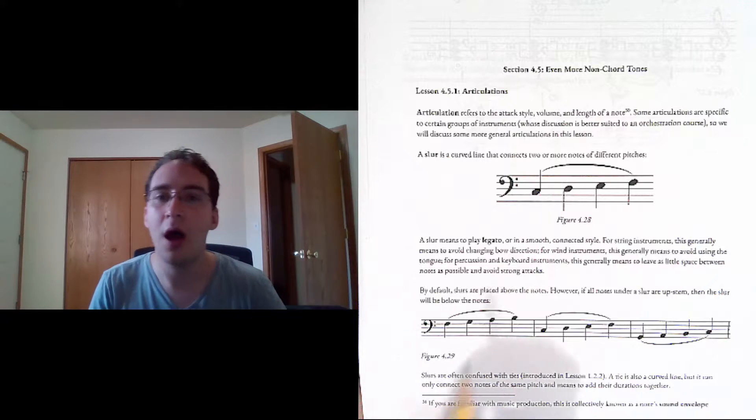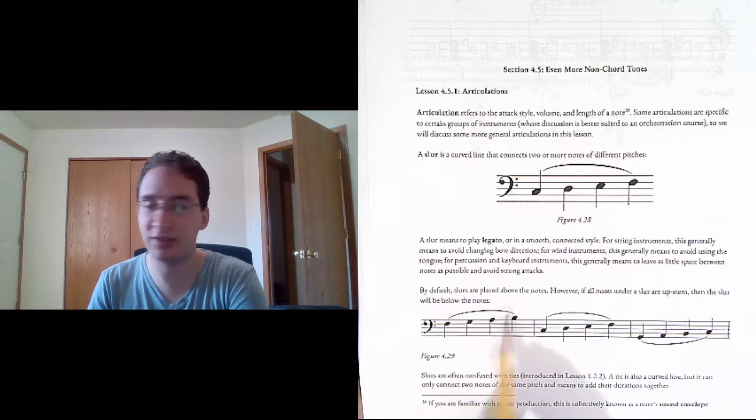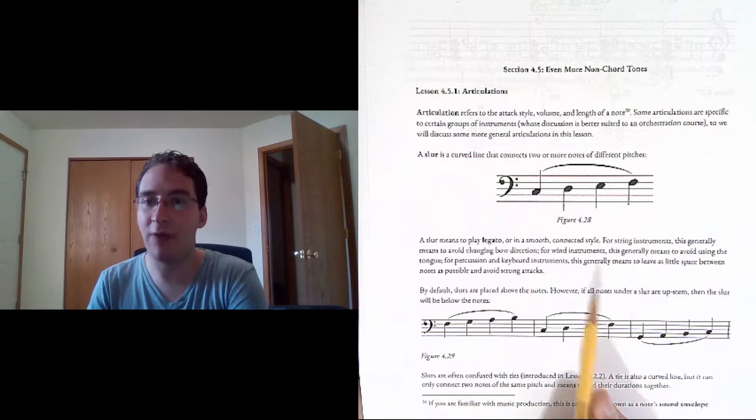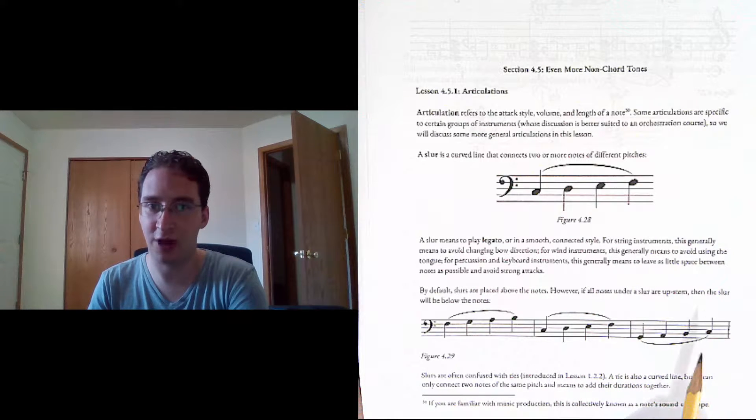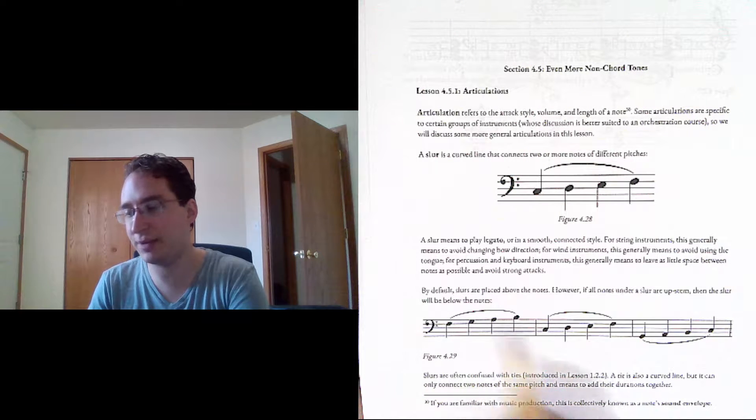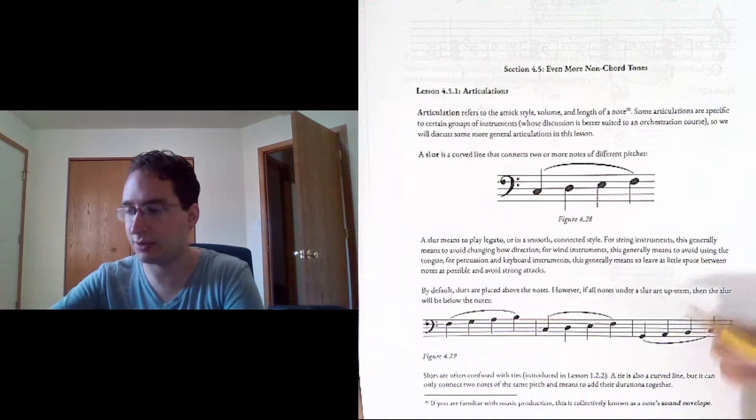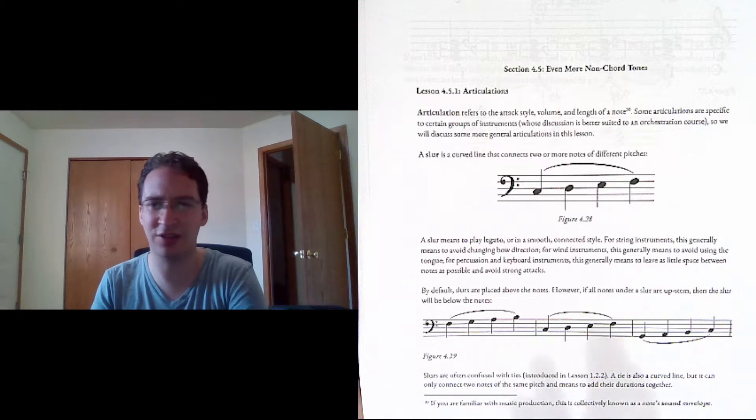Generally, you want slurs above the notes. That's the default. However, if all of the notes under a slur are upstem, then the slur goes below. So here, they're all downstem. It goes above. Here, it's a mix. It goes above. Here, they're all upstem. So the slur goes below. Because otherwise, it would just be connecting stems. That's just a little bit weird.